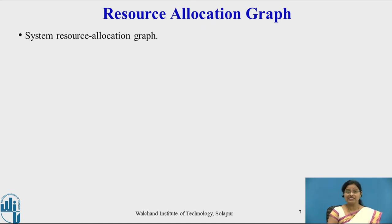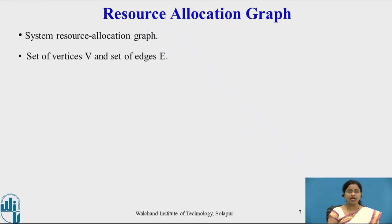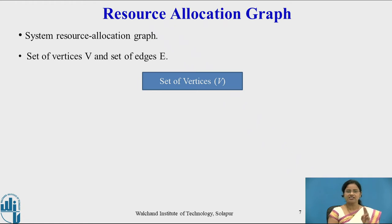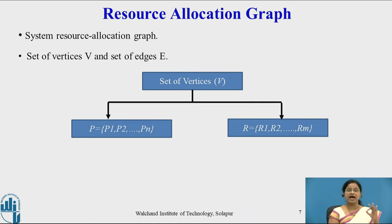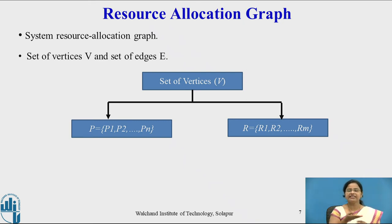The next concept we are going to study is the resource allocation graph — how it plays an important role in the detection of deadlock. A resource allocation graph is a directed graph with a set of vertices V and a set of edges. The set of vertices is divided into two parts: a set of processes P1 to Pn and a set of resources R1 to Rm. Processes and resources are denoted as vertices, and requests and allocations are indicated as edges.